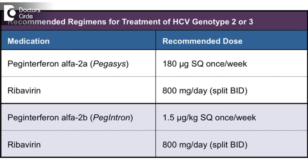Without cirrhosis, in both conditions, the treatment ranges between 12 and 24 weeks. The current treatment is with the combination of sofosbuvir and ribavirin — these are the two agents used to treat HCV genotype 2.